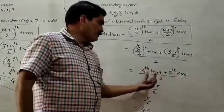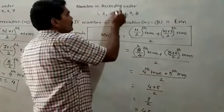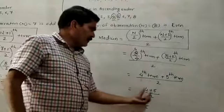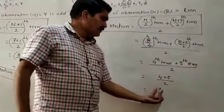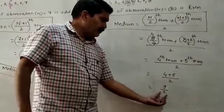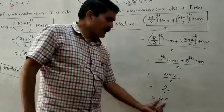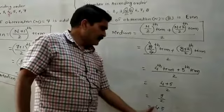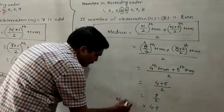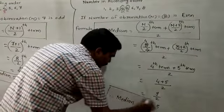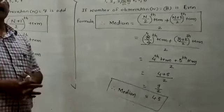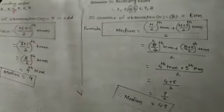The 4th term is 4 and the 5th term is 5. To find the median, calculate the mean of the 4th and 5th terms: 4 plus 5 equals 9, divided by 2 equals 4.5. Therefore, median equals 4.5. In this way, you find the median for the ungrouped frequency distribution table.